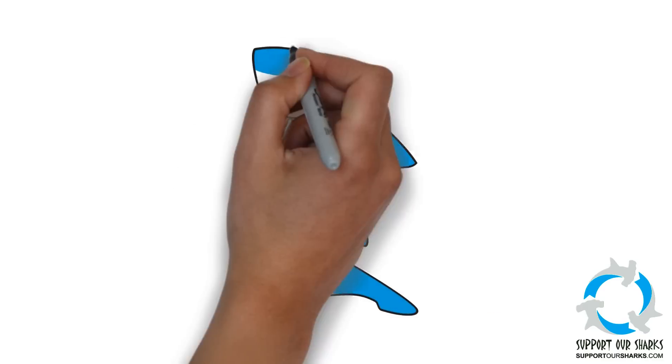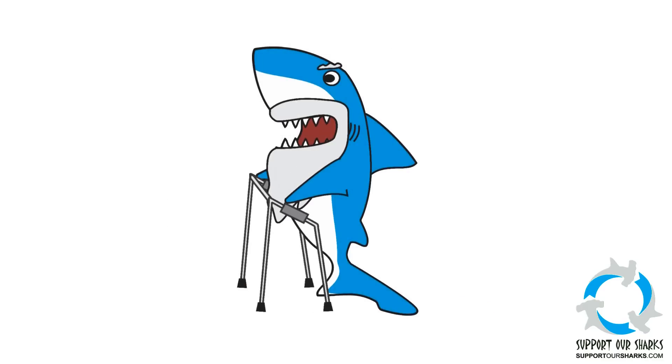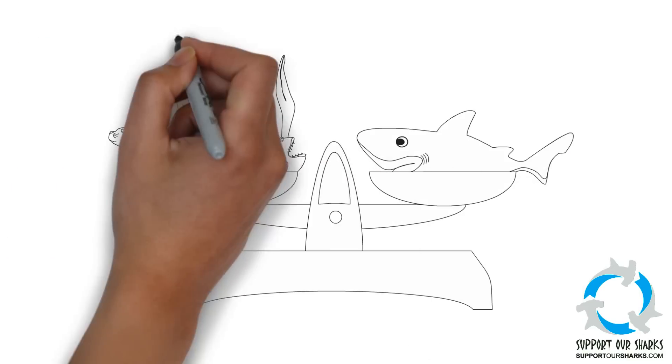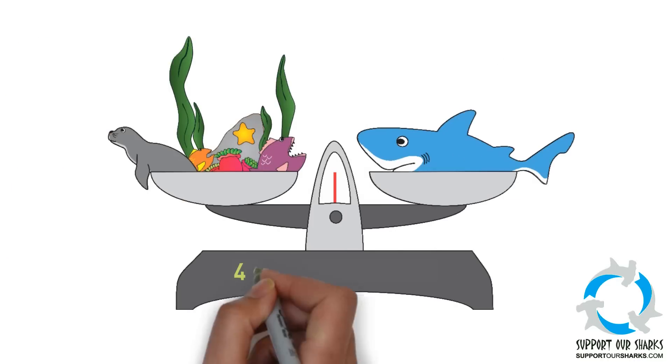In fact, sharks are one of the oldest animals on the planet. Sharks have kept balance in our oceans for over 400 million years.